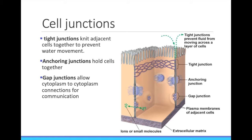Gap junctions are pores that connect the cytoplasm of one cell to the cytoplasm of another cell. These are used in communication and are one of the fastest ways to get a chemical signal from one cell to the next. This is important in coordinating the heartbeat in your heart.